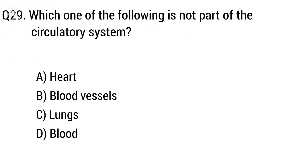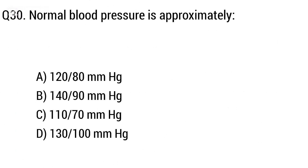Question 29: Which one of the following is not part of the circulatory system? Option A: heart, B: blood vessels, C: lungs, D: blood. The right answer is option C, lungs.